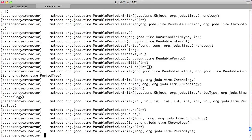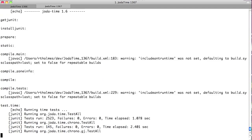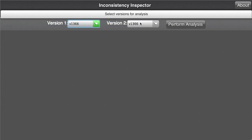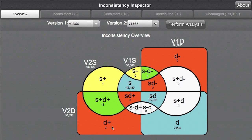The output from all four analyses are XML files that are then used by our tool, the inconsistency inspector. After choosing two versions of interest, the four graphs are loaded from the previously generated XML files, are partitioned, and an overview of the results are presented to the developer.